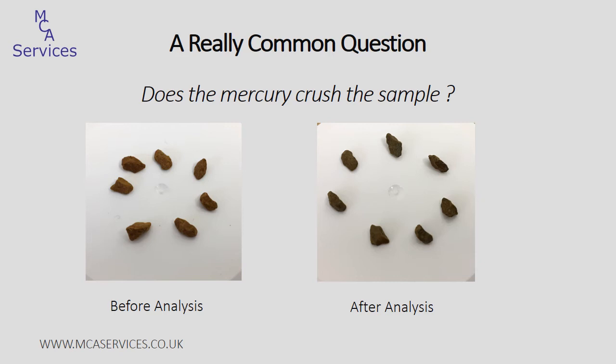The photos here show some instant coffee granules. They're quite a delicate sample, and they can be crushed between the fingers. Even after being subjected to intrusion up to 60,000 PSI, the granules remain intact. There is a very slight discoloration of the samples after analysis, and that's due to mercury being retained within some of the smaller pores.